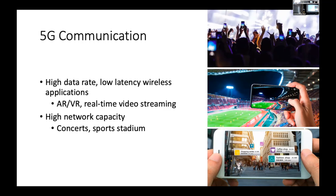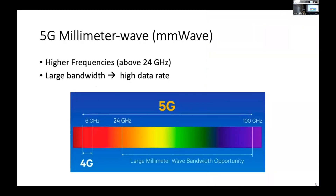People have turned their attention to new technology using 5G millimeter wave. 5G millimeter wave operates in the frequency band above 24 GHz and ranges all the way up to 100 GHz. This offers many times more available bandwidth compared to 4G LTE and provides new opportunity to support high data rate multi-gigabit wireless applications.